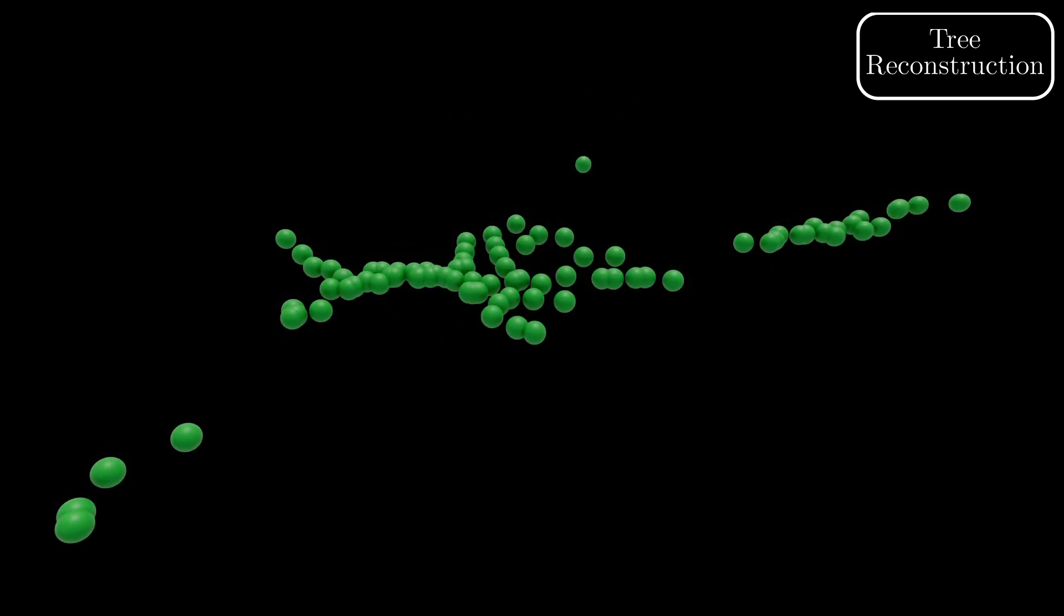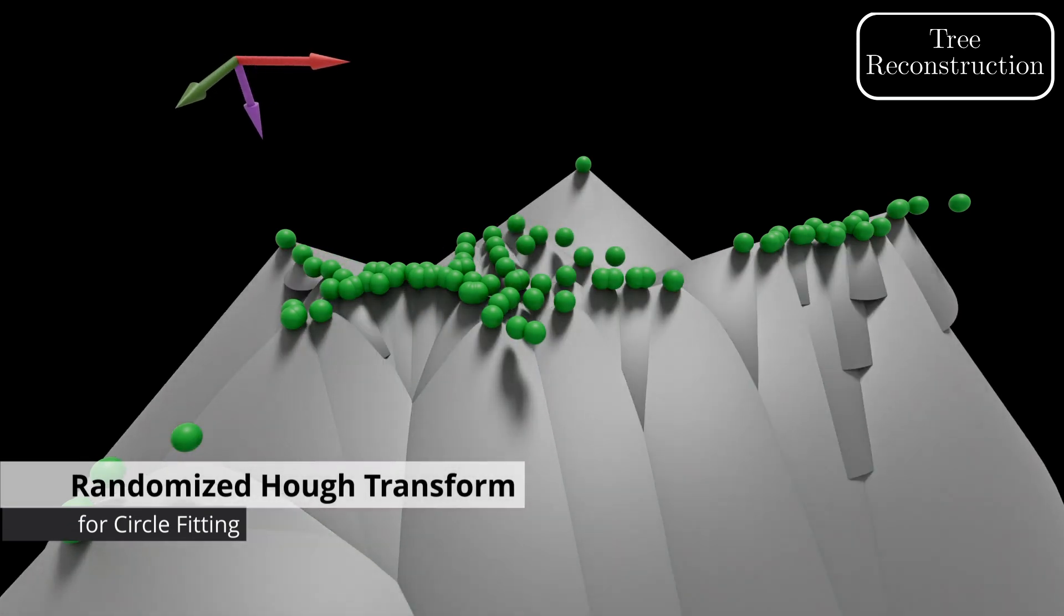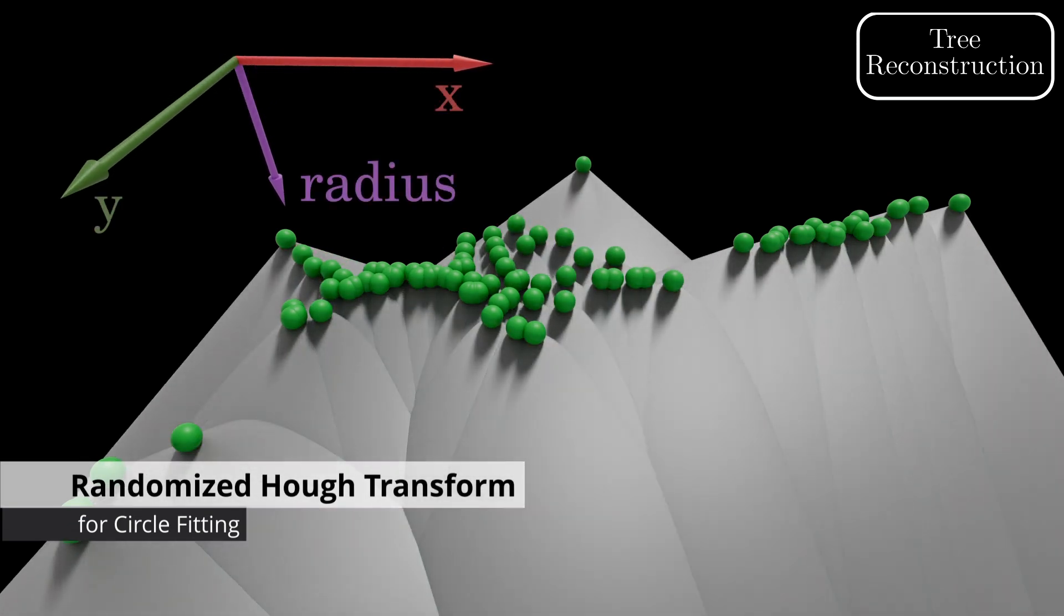So, we employ a continuous form of this algorithm, the randomized Hough transform. In the continuous Hough space, each point votes along a cone with a unit slope. Wherever many cones intersect, which means that many votes are cast, we expect the best circle fit.